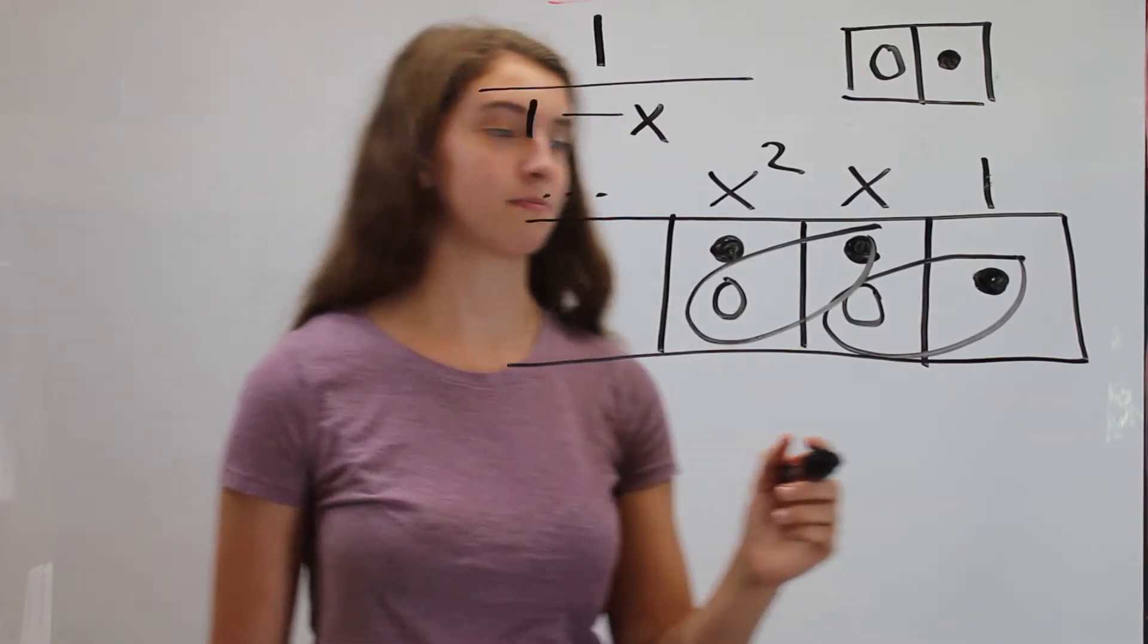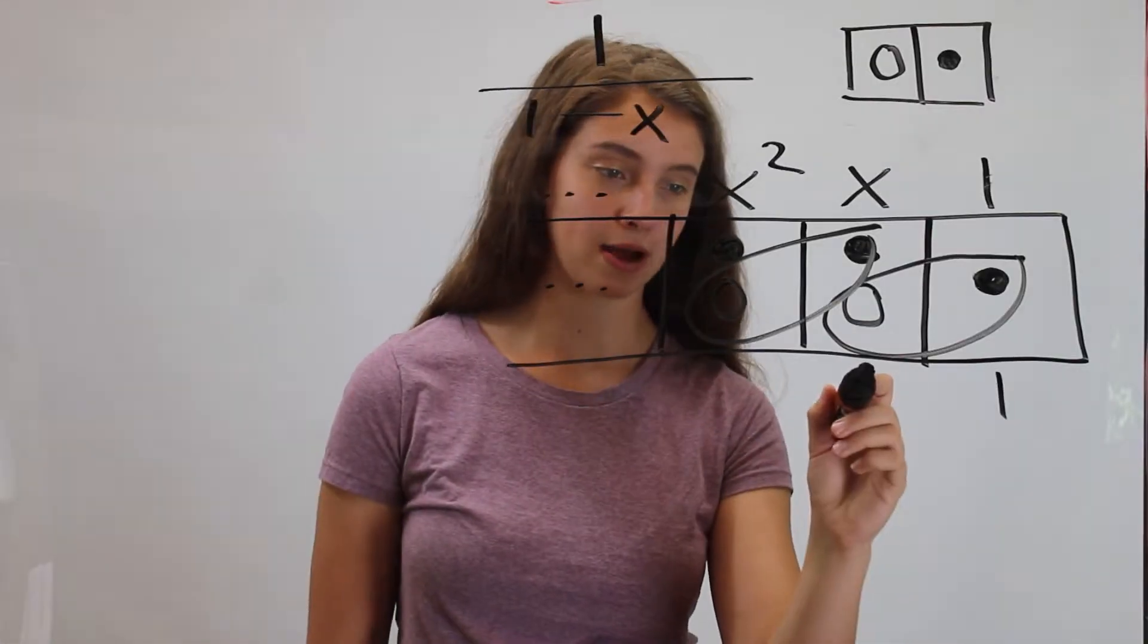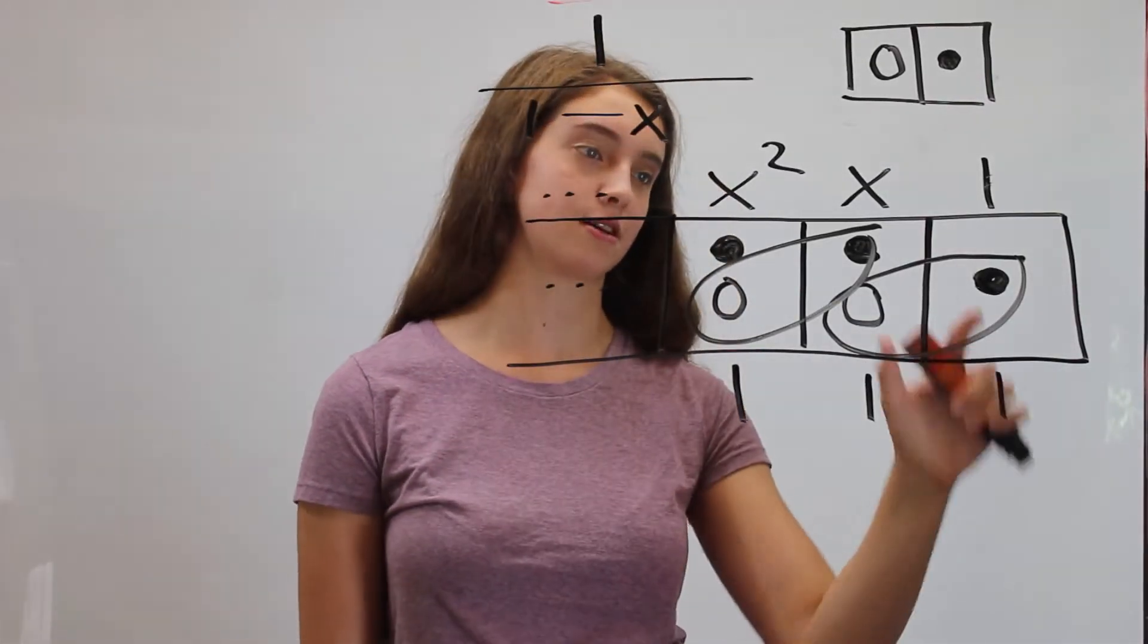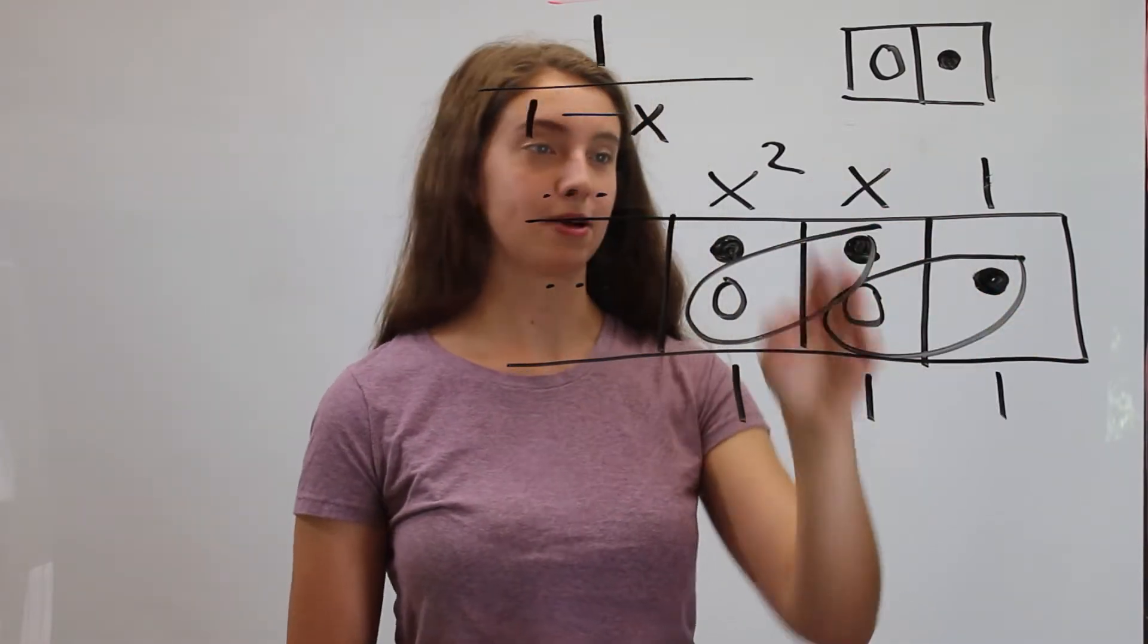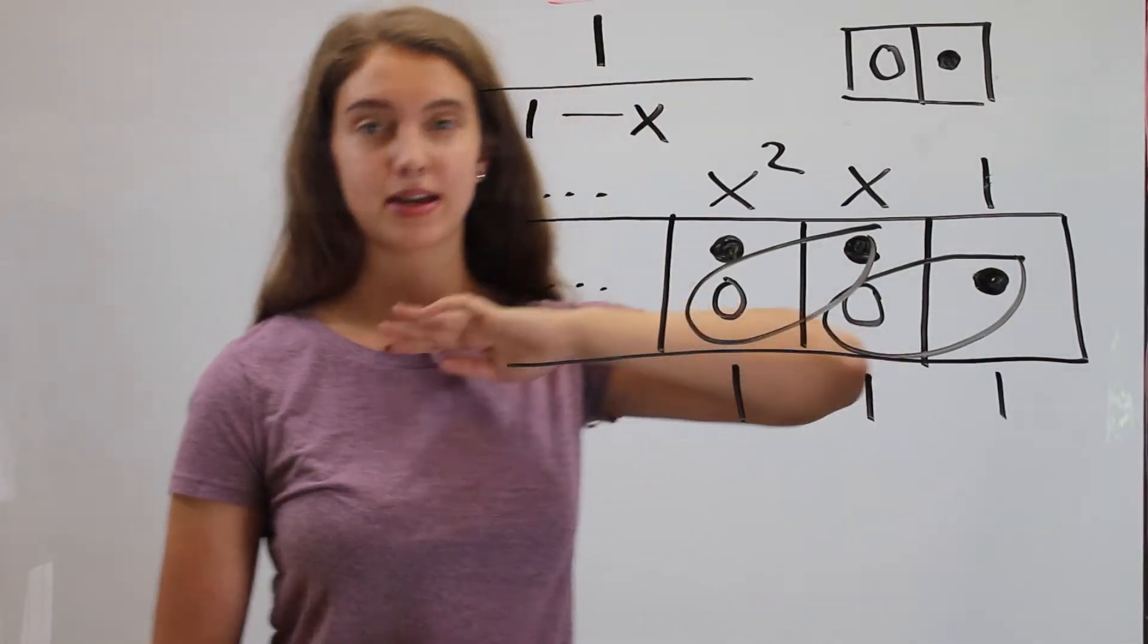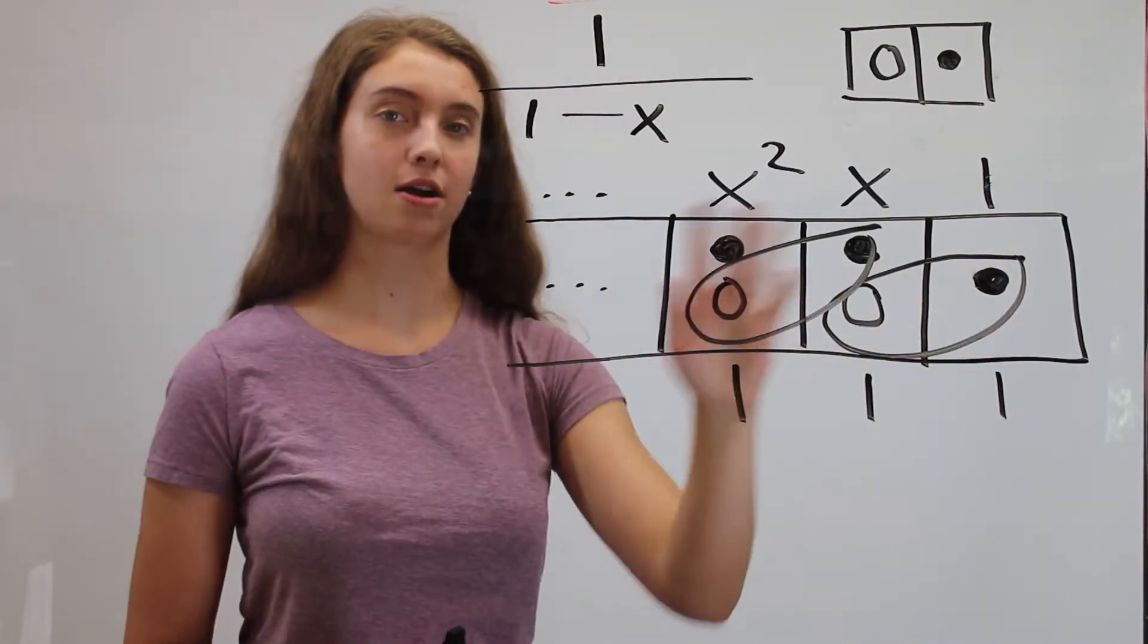So that amounts to there being one positive dot in every place. So there'll be one dot in the ones place, one dot in the x place, one in the x squared place, on forever in our answer.